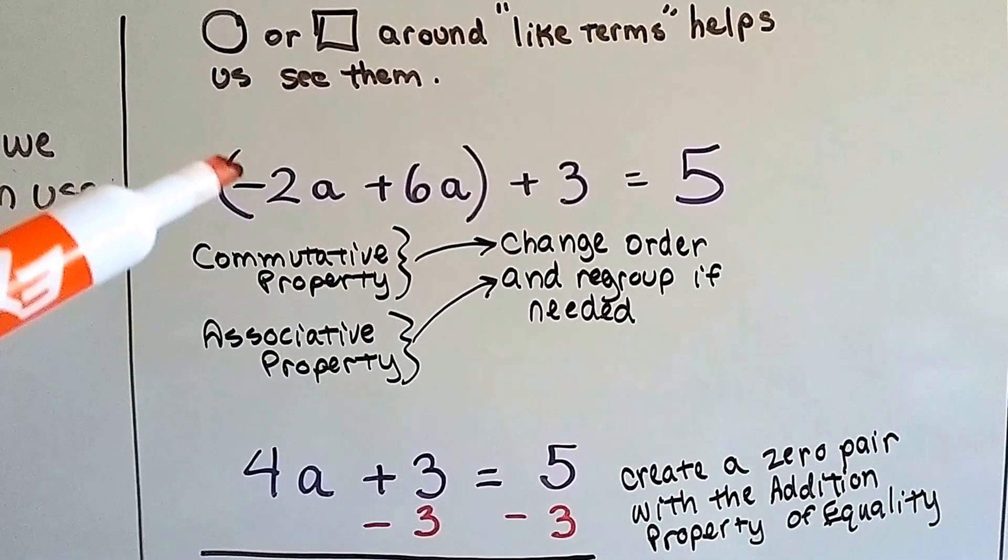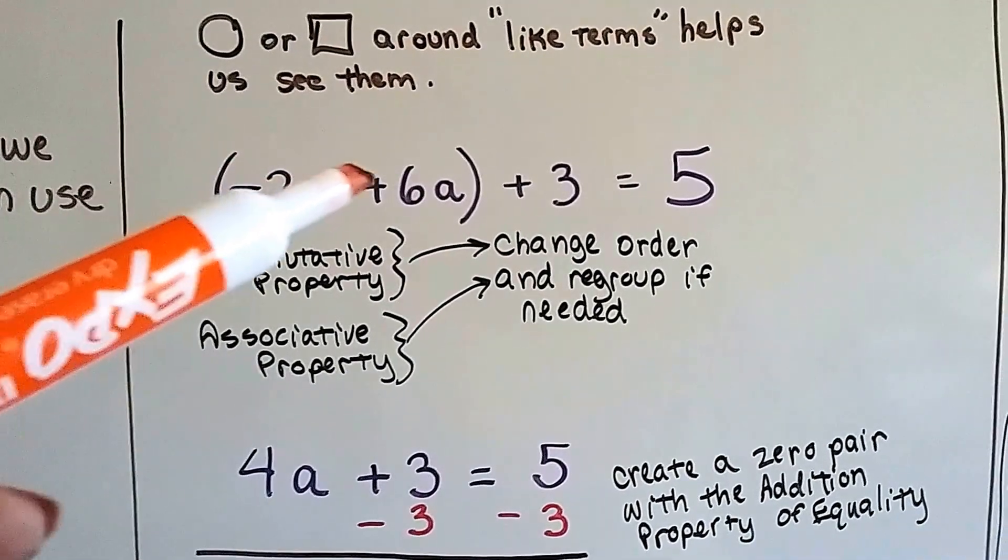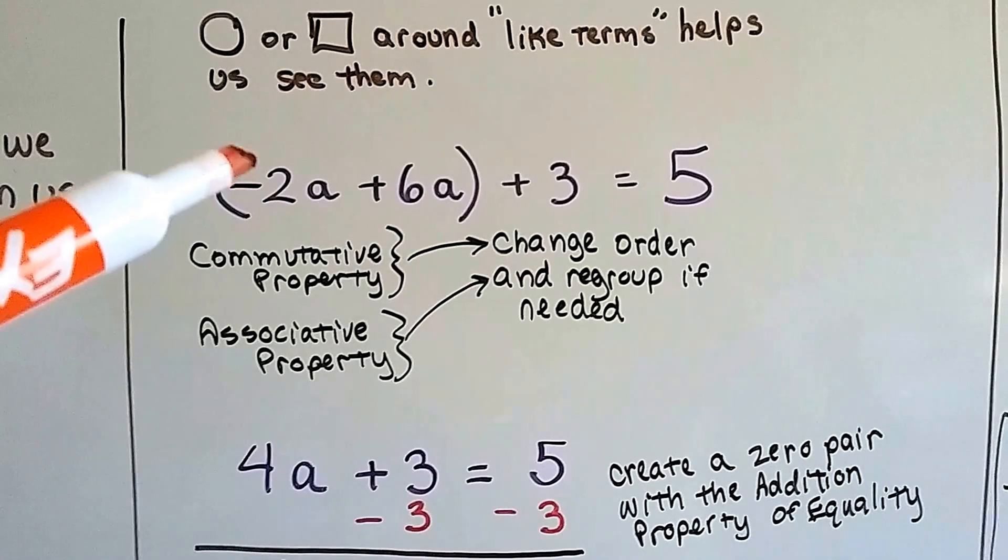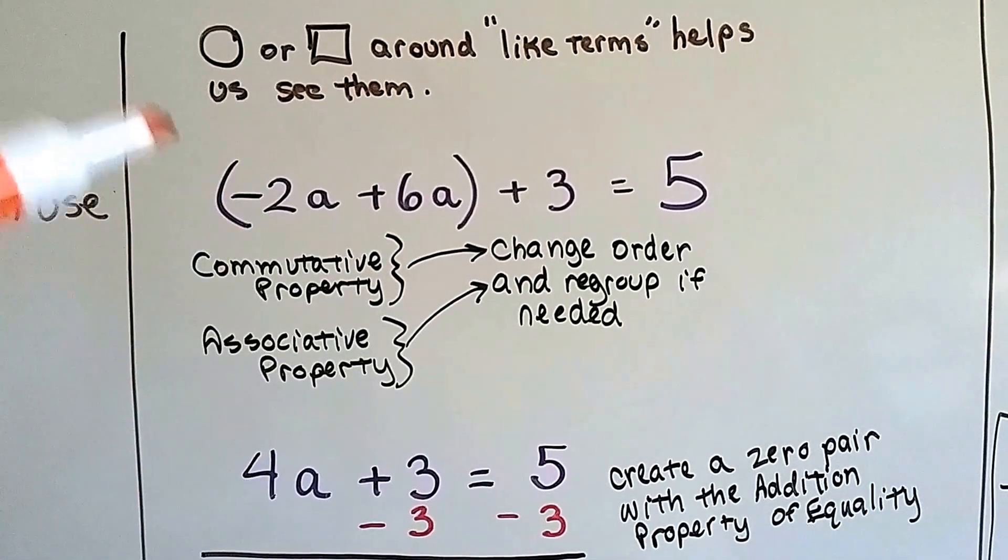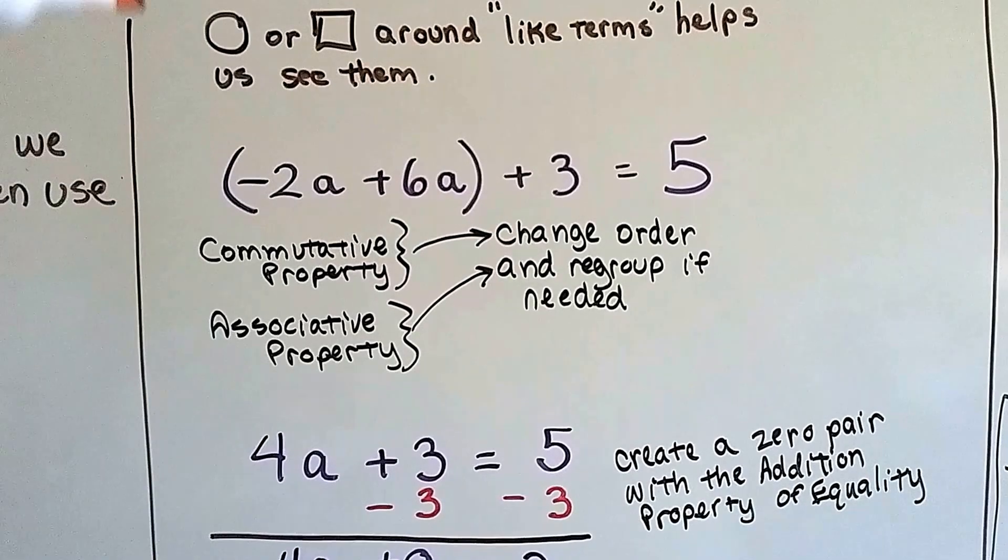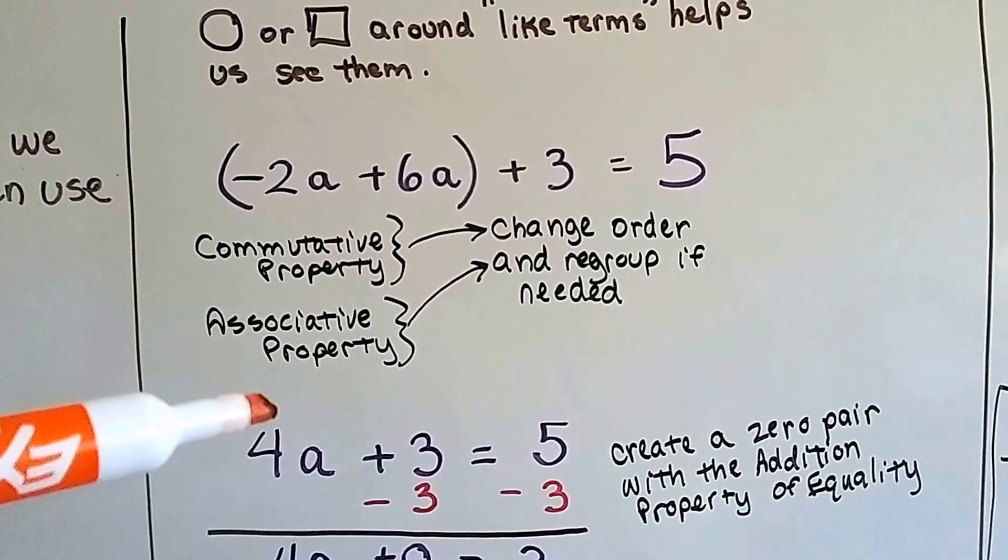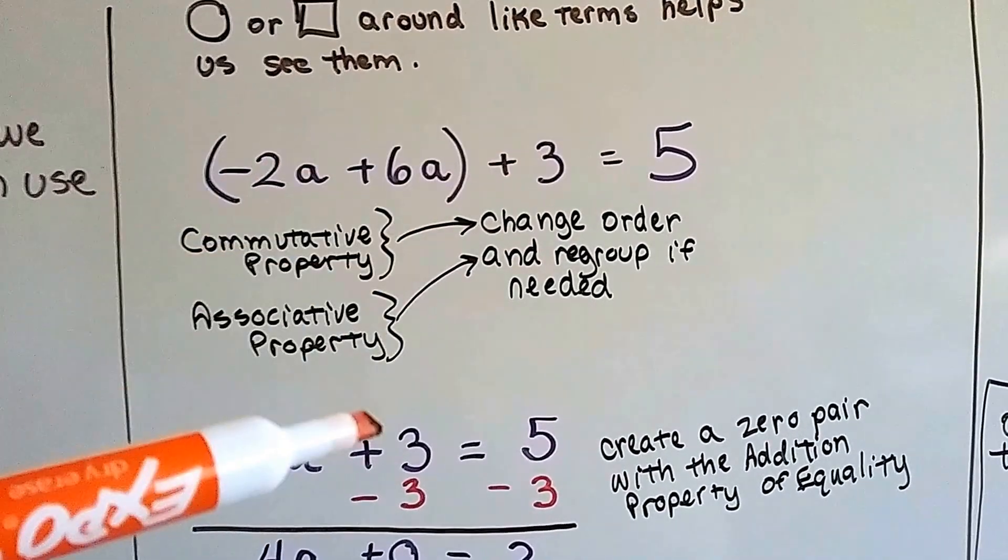So now, this minus 2a plus 6a gets it out of the negative above the zero to 4a. It raised it on the number line up to a 4a. And we're going to add this 3.